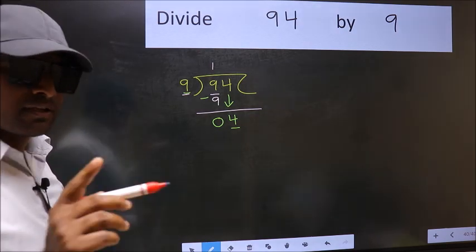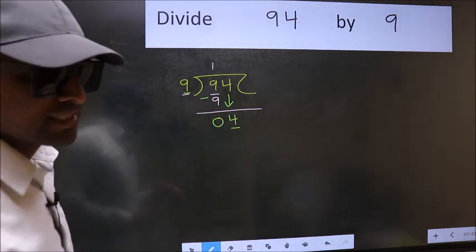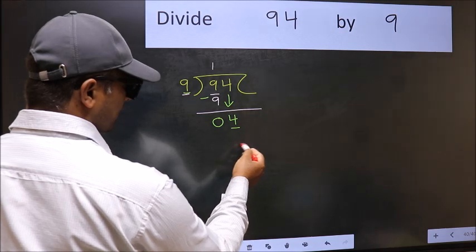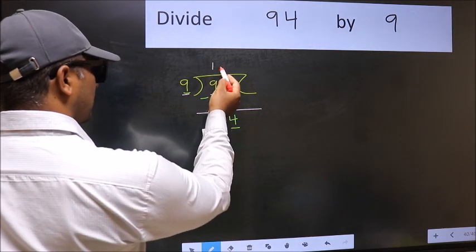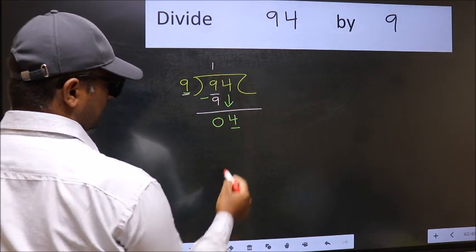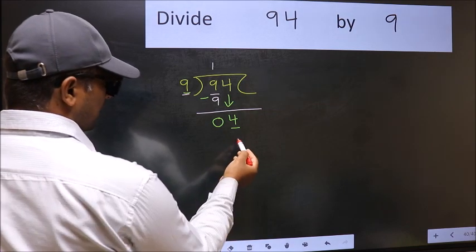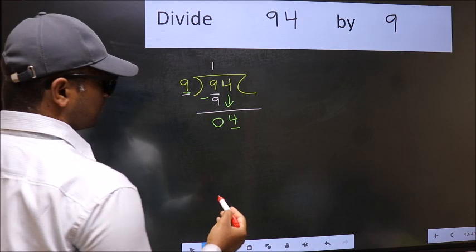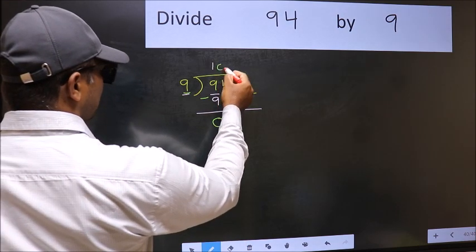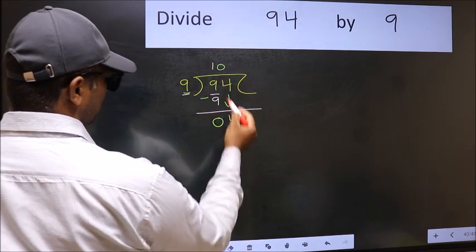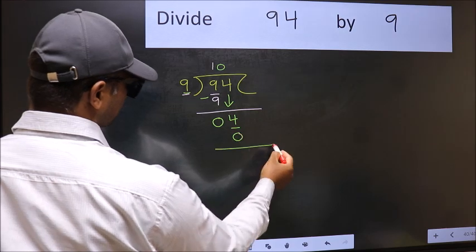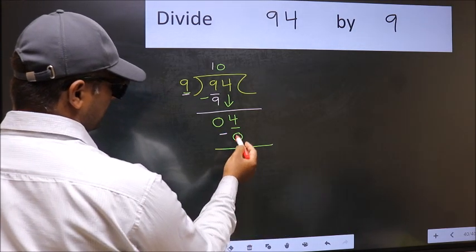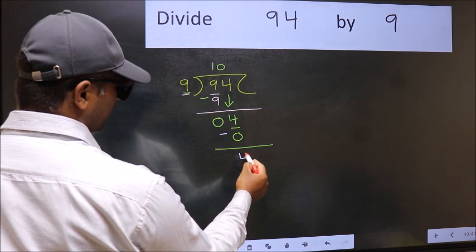Instead, what you should think of doing is, which number should we take here? If I take 1, we will get 9. But 9 is larger than 4. So what we should do is, we should take 0. So 9 into 0, 0. Now you should subtract. 4 minus 0, 4.